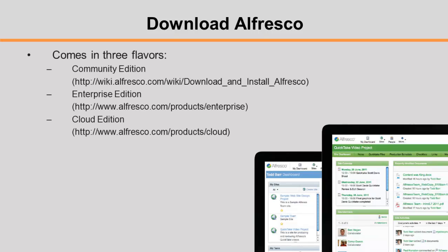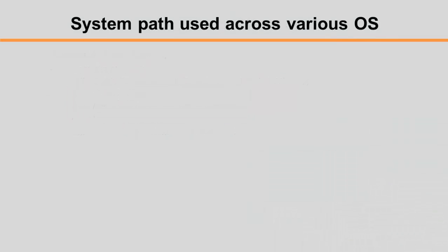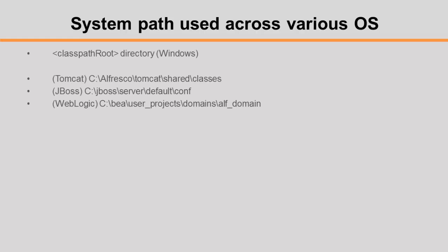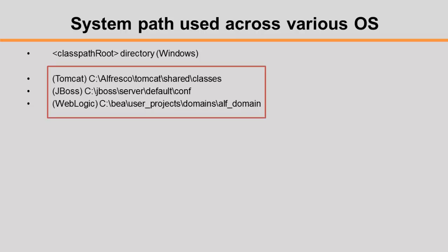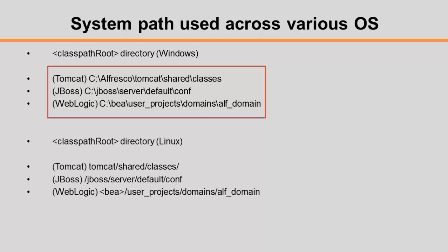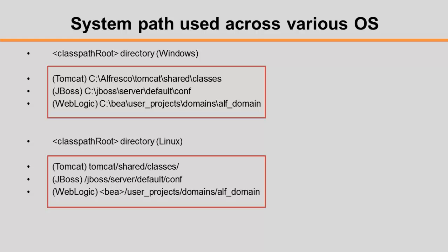Alfresco gives you different download options to choose from as per your requirement. Please note we have downloaded and used the Enterprise edition of Alfresco for this video tutorial. Now that you have an overview of Alfresco, and assuming that you have downloaded the Enterprise edition on your local machine, let's look at the system path where Alfresco would run. Alfresco works on both Windows and Linux operating system machines. The class path root denotes a directory whose contents are automatically added to the start of your application server's class path. The location of this directory varies depending on your application server, as shown here.